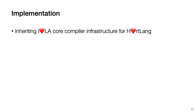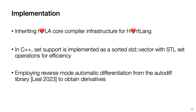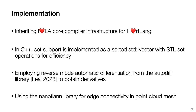We implemented Ahad Mesh as a fork of Ahad LA, inheriting the core compiler infrastructure for hotline, which already provides sparse matrix support for boundary matrices. Ahad Mesh heavily relies on set operations when collecting neighbor and stencil elements; set support is implemented as a sorted STD vector with STL set operations for efficiency. Ahad Mesh employs reverse-mode automatic differentiation from the autotip library to obtain derivatives, currently only implemented in the C++ backend. Our point cloud mesh construction defines edge connectivity based on radius or k-nearest neighbors, done efficiently with a KD tree built using the nanoplane library.